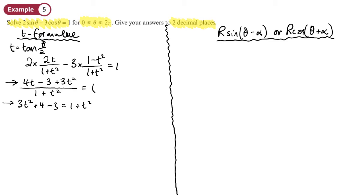Then everything can be brought to the same side. So I'll have 2t squared plus 4t, and then I'm going to take away 1 from both sides, so I've got minus 4 equals 0. I can divide everything by 2, so I've got t squared plus 2t minus 2 equals 0.